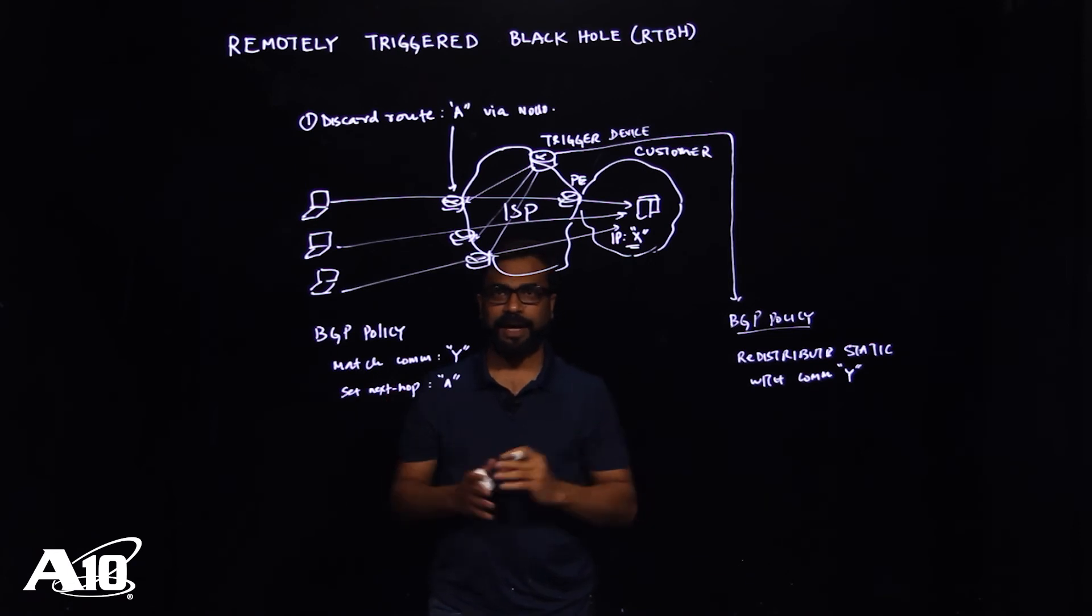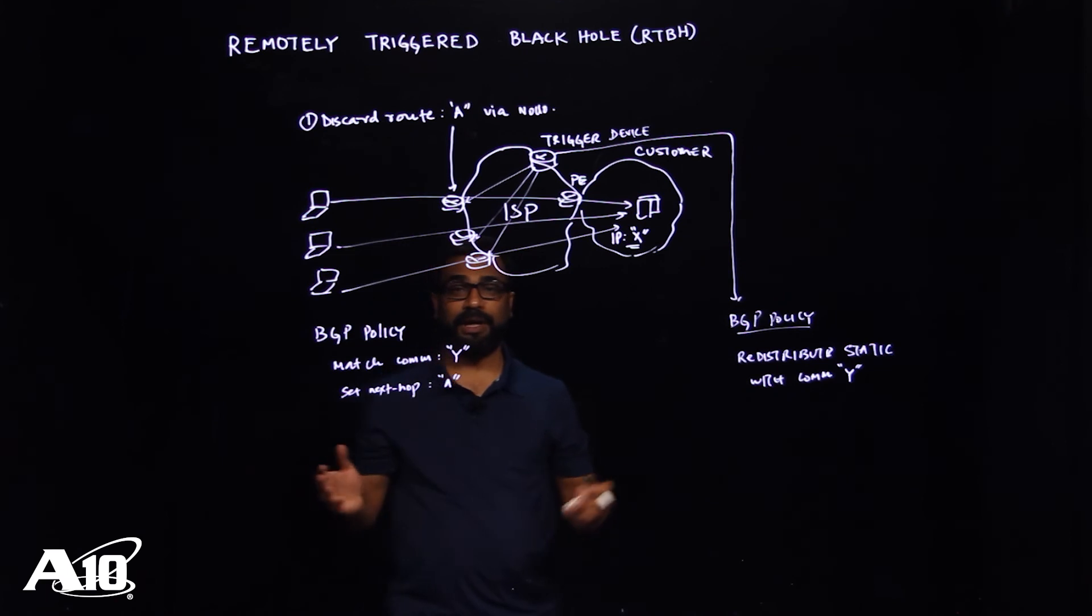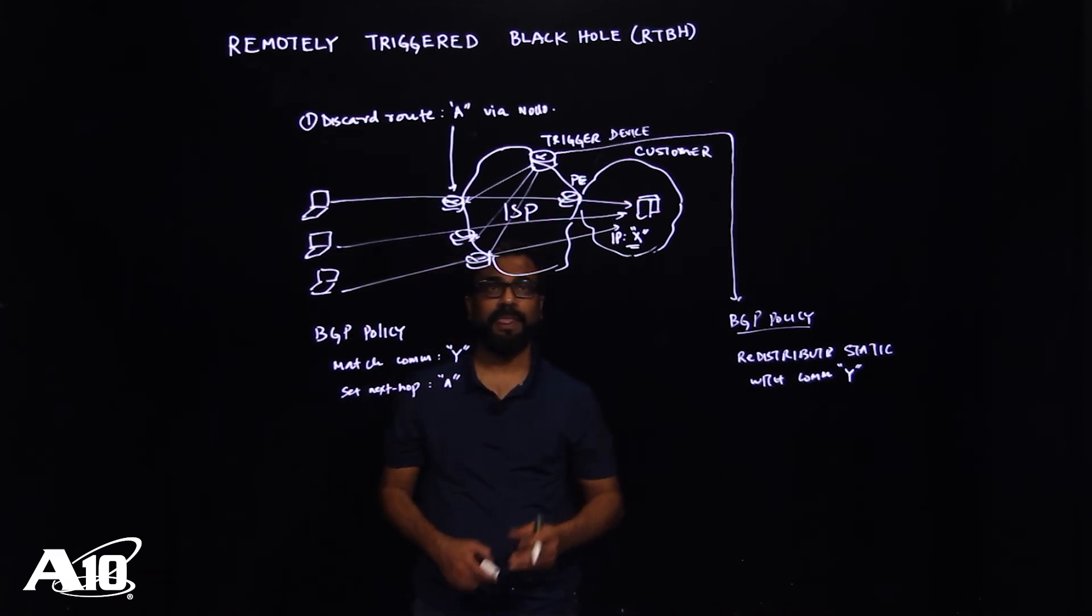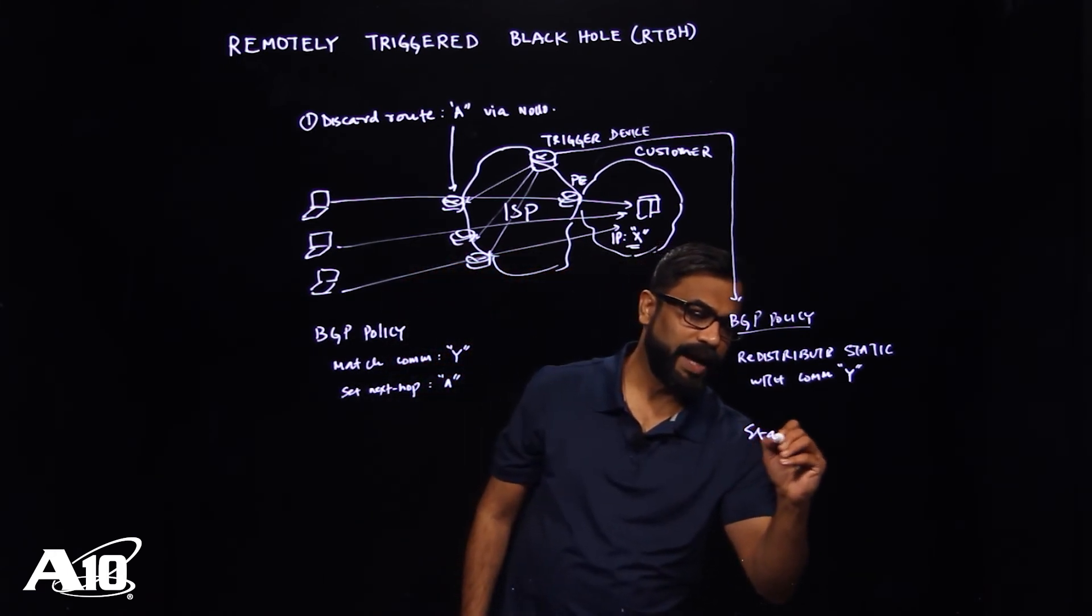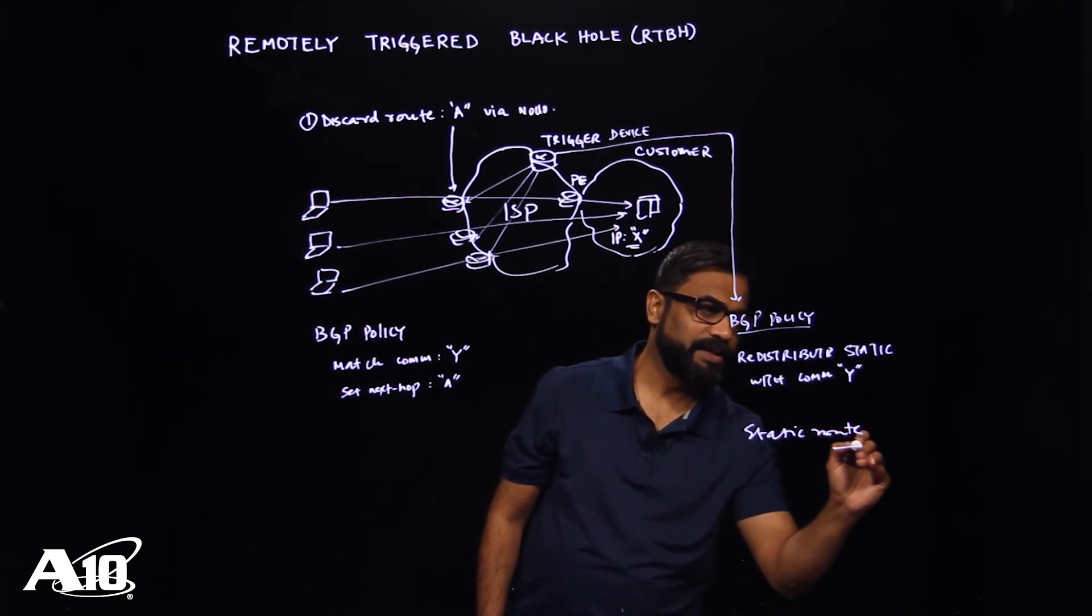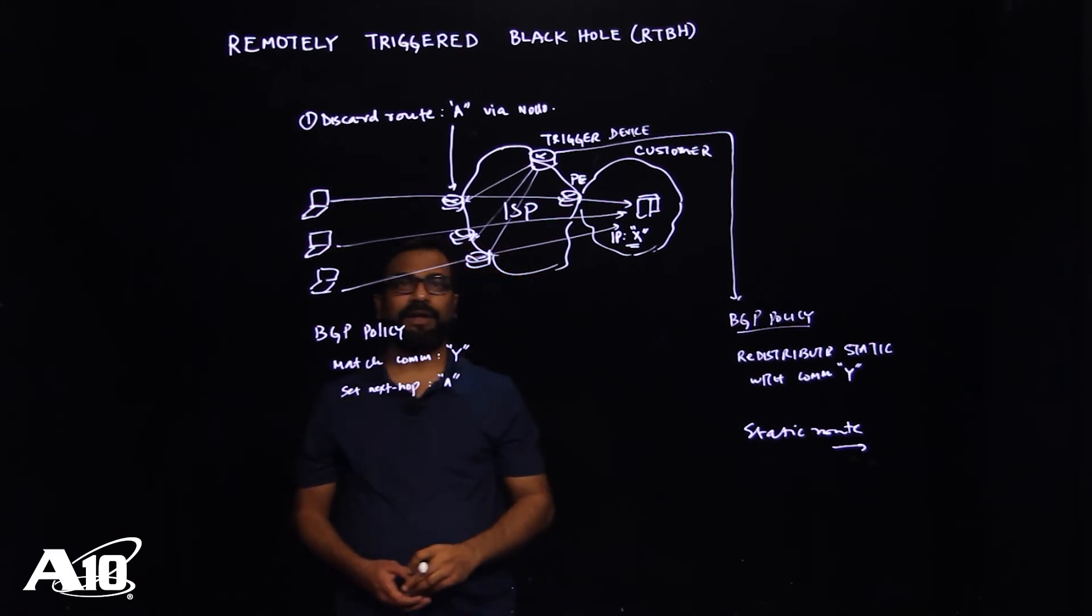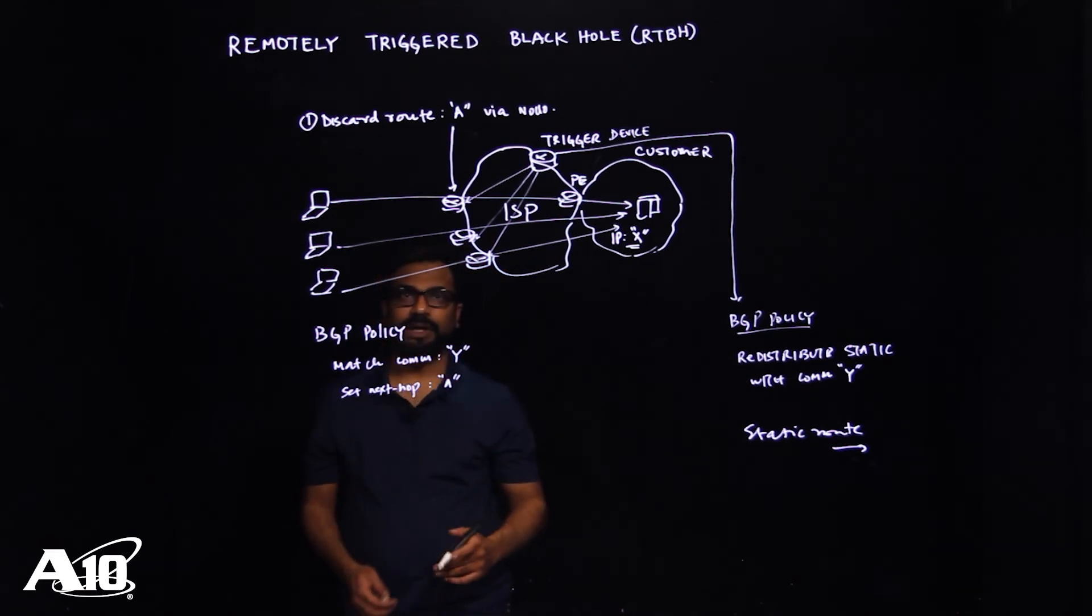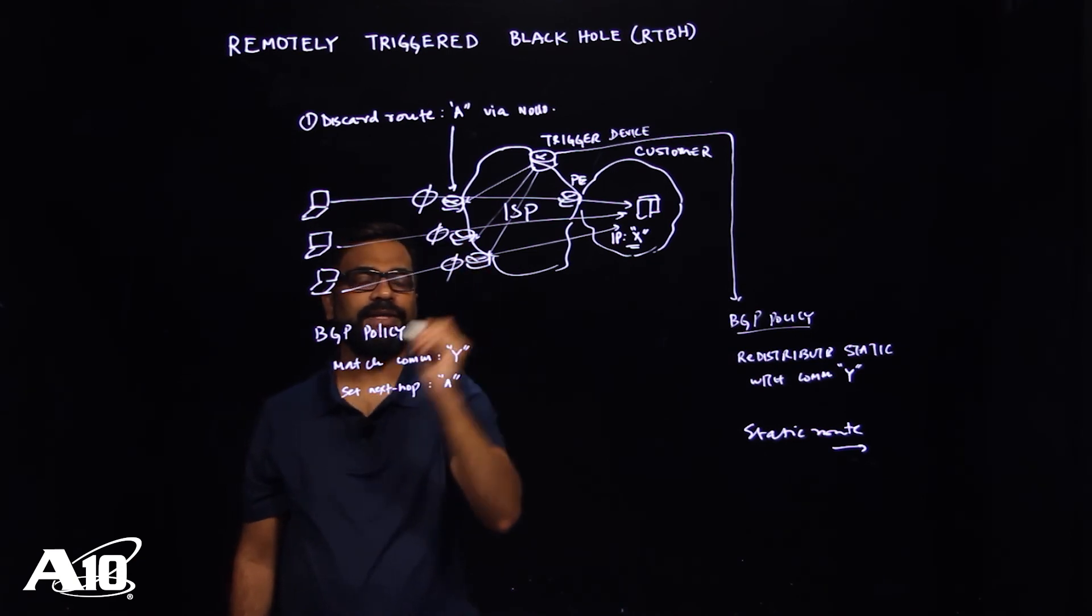So now, when the attack happens and you need to block the traffic at the edge, a network admin or system operator needs to log in to the triggered device and simply add a static route with a certain tag in it. And this static route will be redistributed using this BGP policy and will be advertised toward the edge devices. The match is going to happen and eventually the traffic will get blocked on your edge devices.